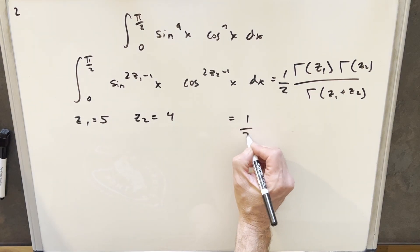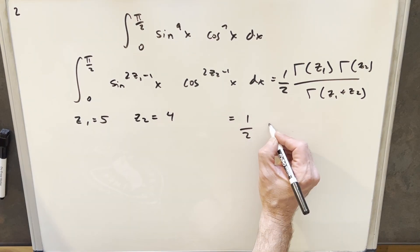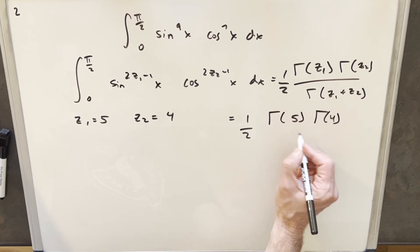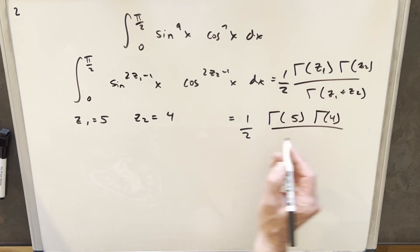So then coming over here, we're going to have our half out front. We'll use these values. We're going to have gamma of 5 times gamma of 4, and then we'll add these in the denominator, so we're going to have just gamma of 9.